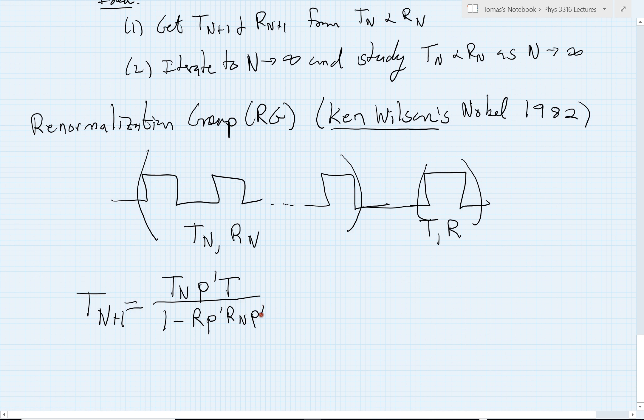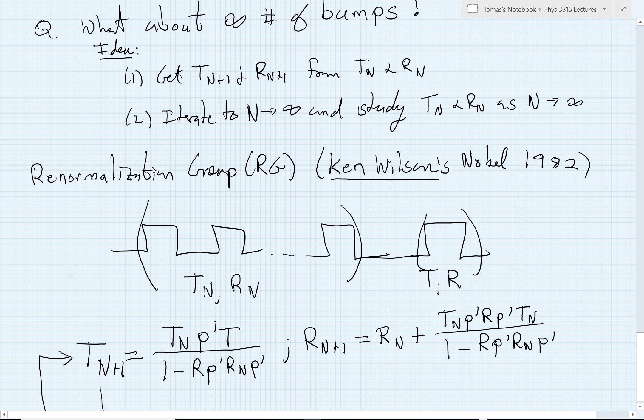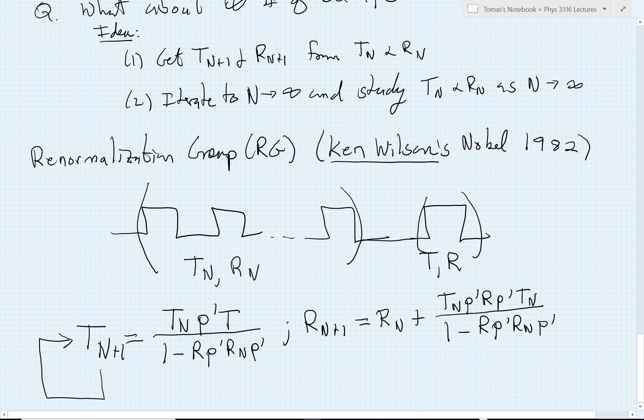Whereas R(n+1), first reflects off of the n unit, and then has this more complicated process that transmits through the n unit, propagates across, reflects across the single unit, propagates back across, transmits finally out through the n unit. And then we're divided by the same ricochet factor, R, P prime, Rn, P prime. And then the idea is we simply iterate this. And the question then is to learn how we interpret what this formula is telling us as n goes to infinity.